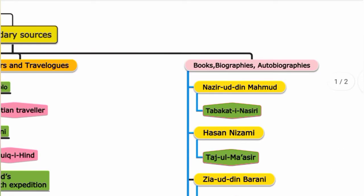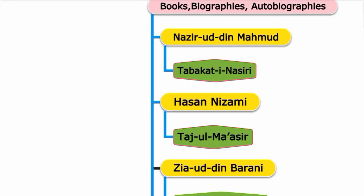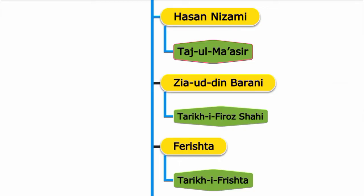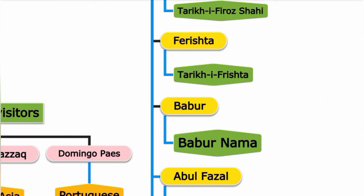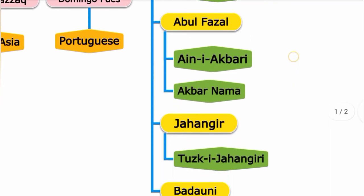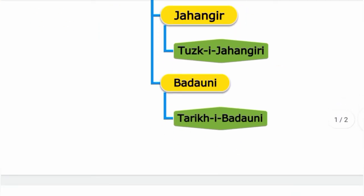Secondary sources also include books, biographies, and autobiographies. Notable works: Naziruddin Muhammad wrote Tabakat-i-Nasiri; Hasan Nizami wrote Tajul Masir; Ziauddin Barani wrote Tarikh-i-Firoz Shahi; Firishta wrote Tarikh-i-Firishta. Babur wrote Baburnama; Abul Fazl wrote Ain-i-Akbari and Akbarnama; Jahangir wrote Tuzuk-i-Jahangiri; Badauni wrote Tarikh-i-Badauni.